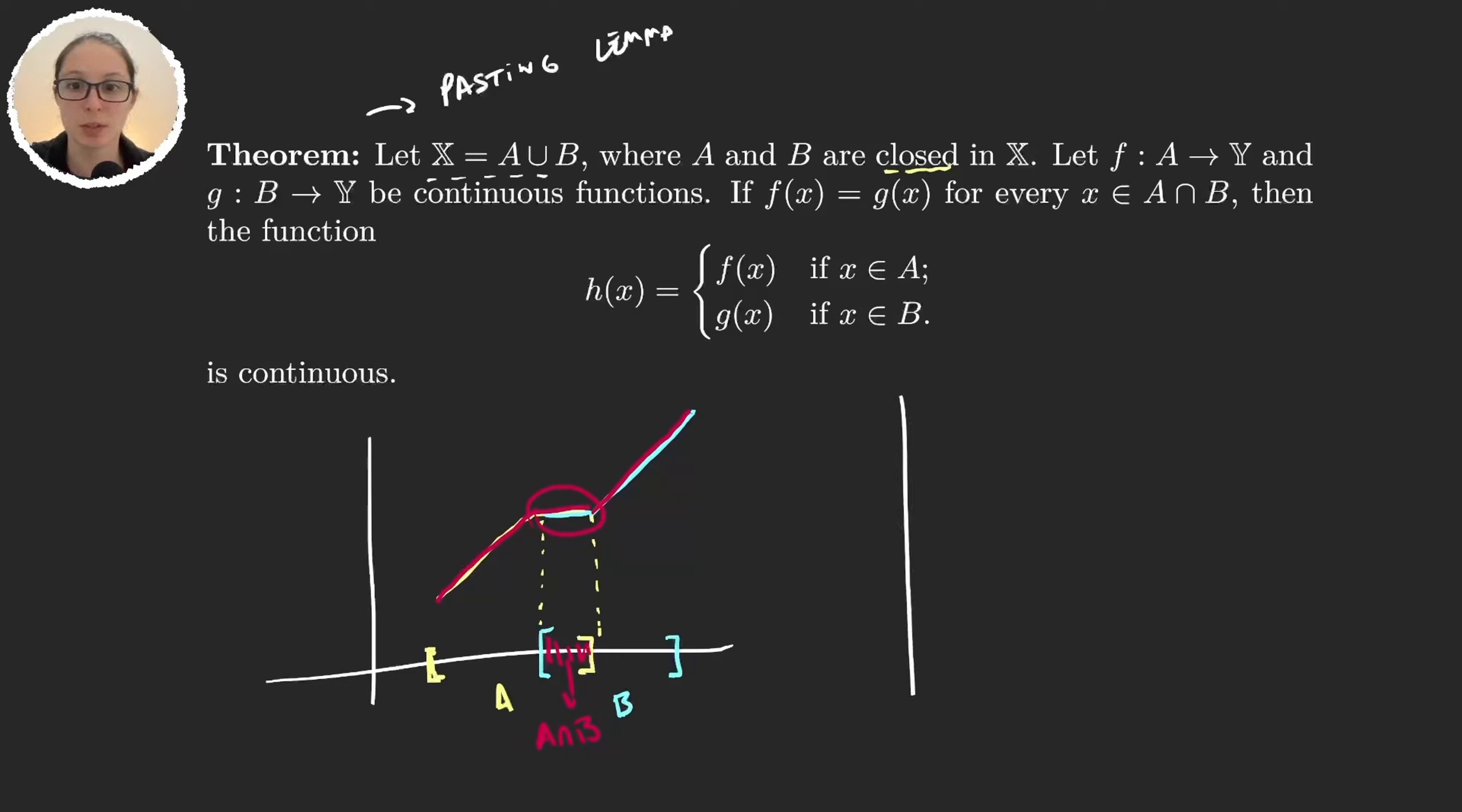But it makes sense because if we have another situation, now let's say again this is a, and this other set is b. If my function did something like this and the other one did something like this, then when I would define this function h, I would come here and when I reach this point in which x is both in a and in b, I wouldn't know how to define my function like this or like this. So that is why we're asking here to have f of x equal to g of x for all the elements in the intersection.